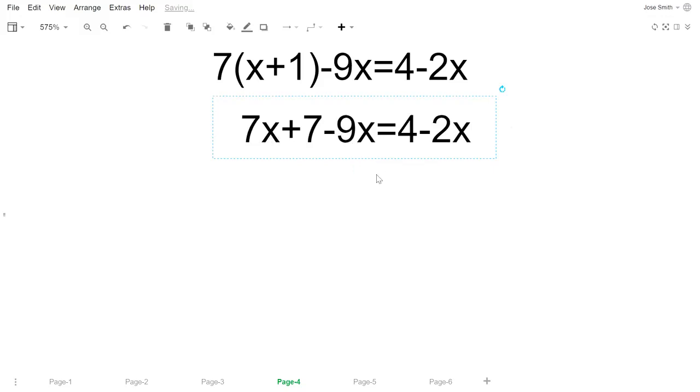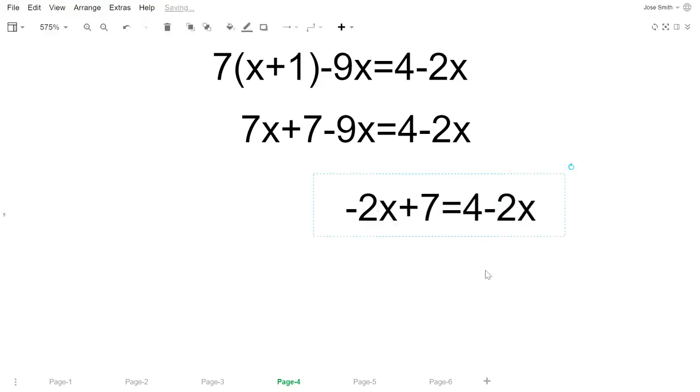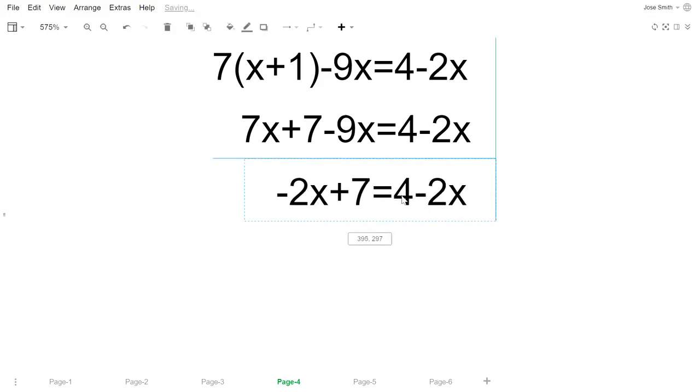On this side we got 7x and negative 9x, so let's combine those two terms. 7x minus 9x will give you negative 2x. You still got that positive seven equals 4 minus 2x. You might already see the issue here, but let's keep going.